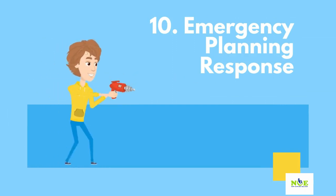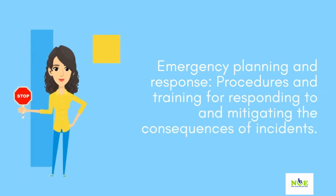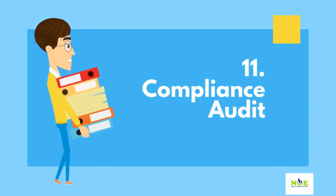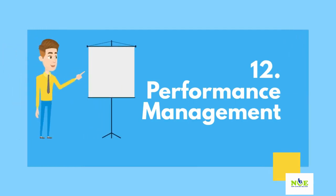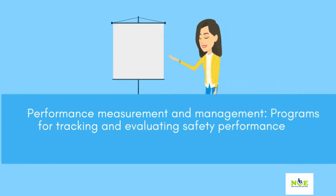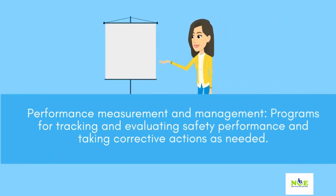10. Emergency planning and response — procedures and training for responding to and mitigating the consequences of incidents. 11. Compliance audits — regular audits of facilities to ensure that they are in compliance with regulations and industry standards. 12. Performance measurement and management — programs for tracking and evaluating safety performance and taking corrective actions as needed.